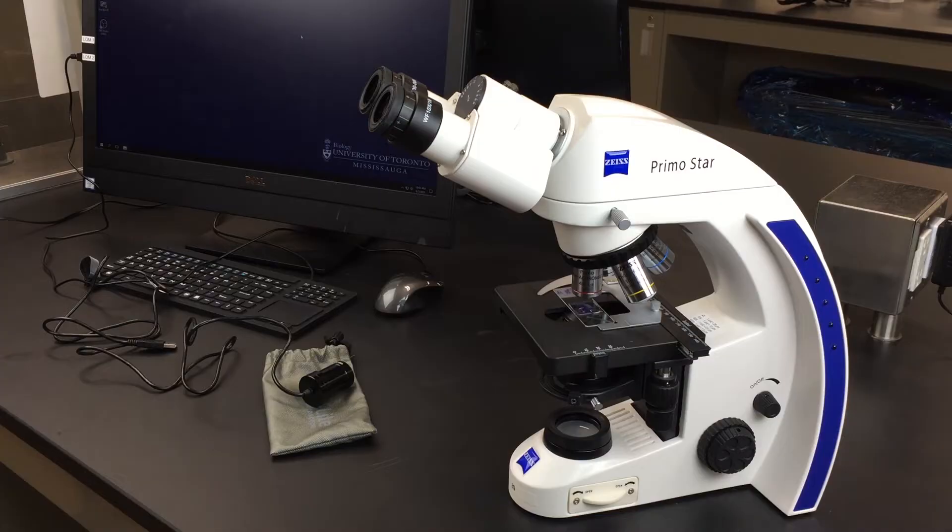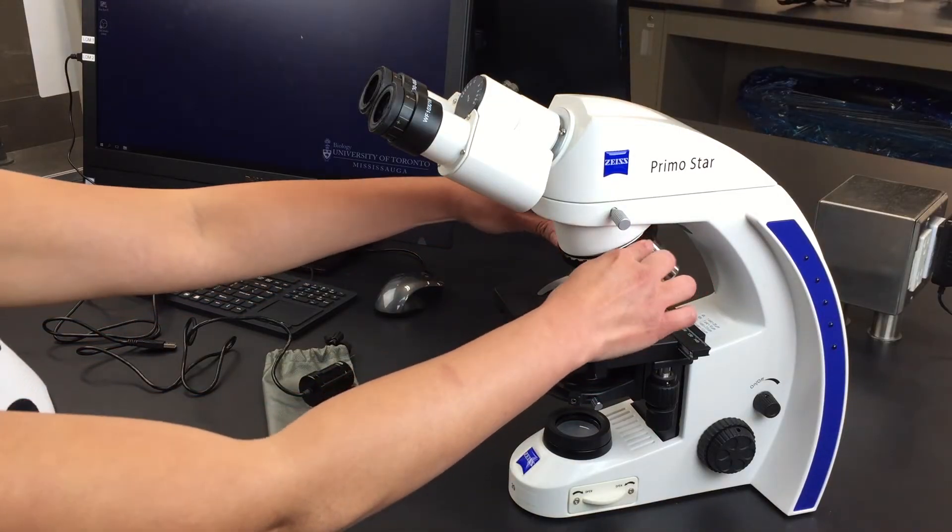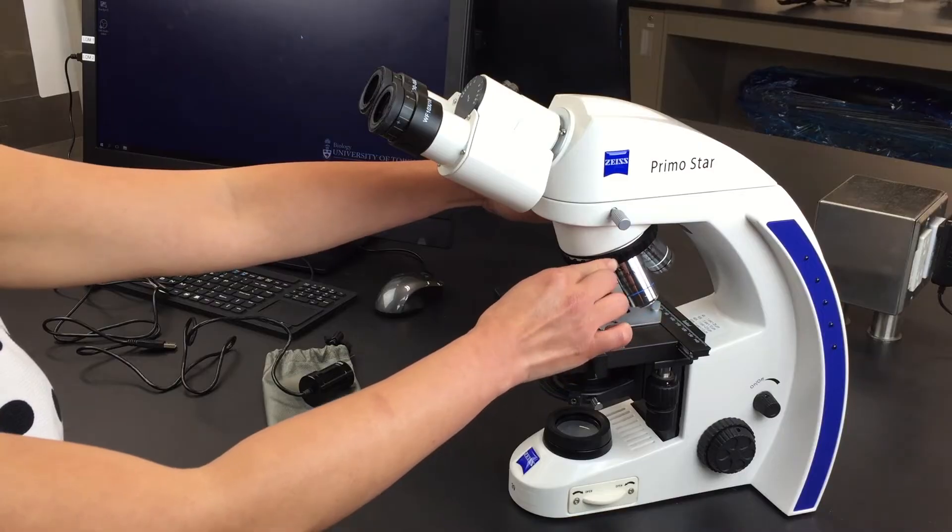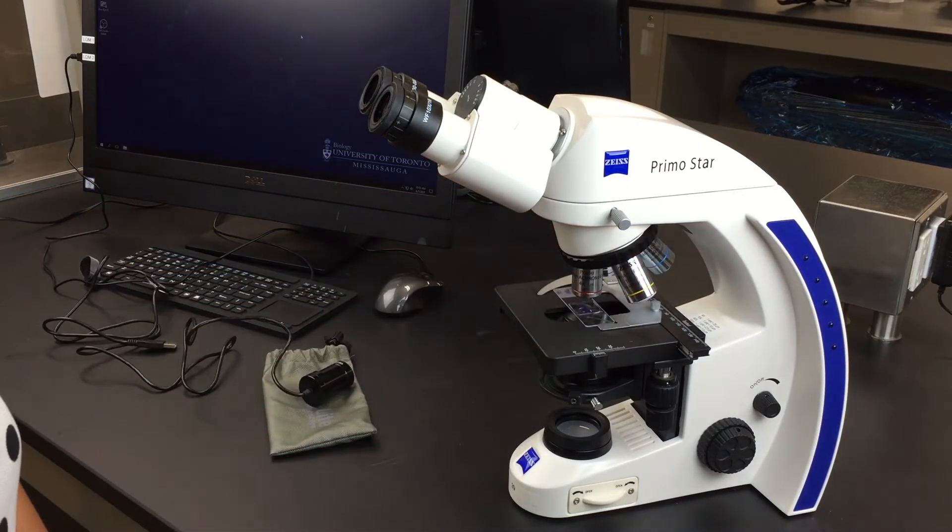In order to switch from one objective to another, we use a revolving nose piece. Always start with the lowest objective and move up accordingly.